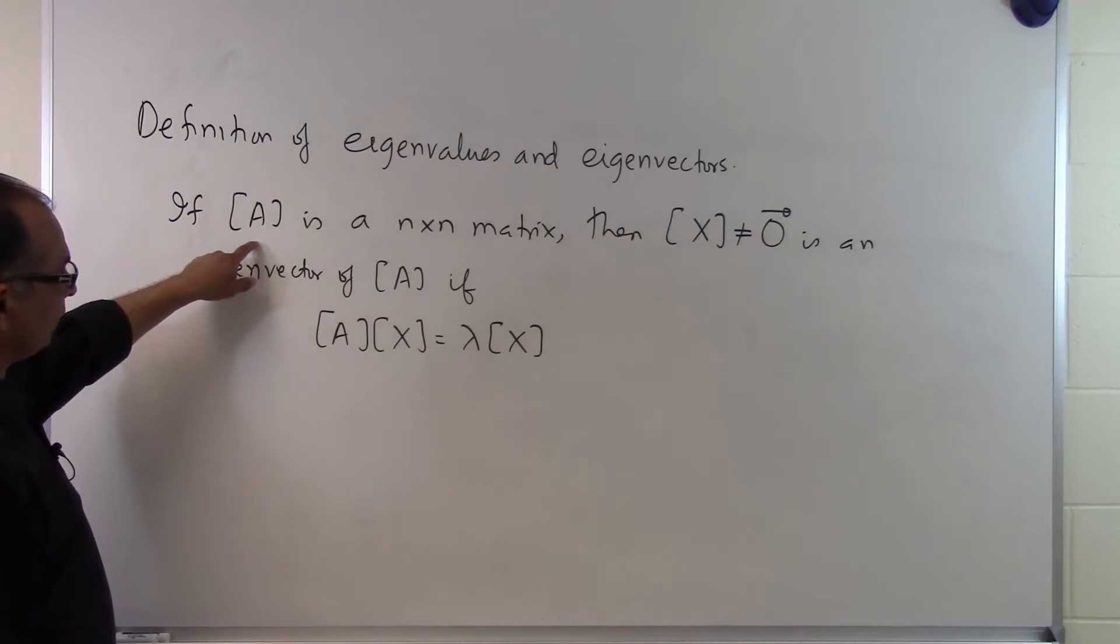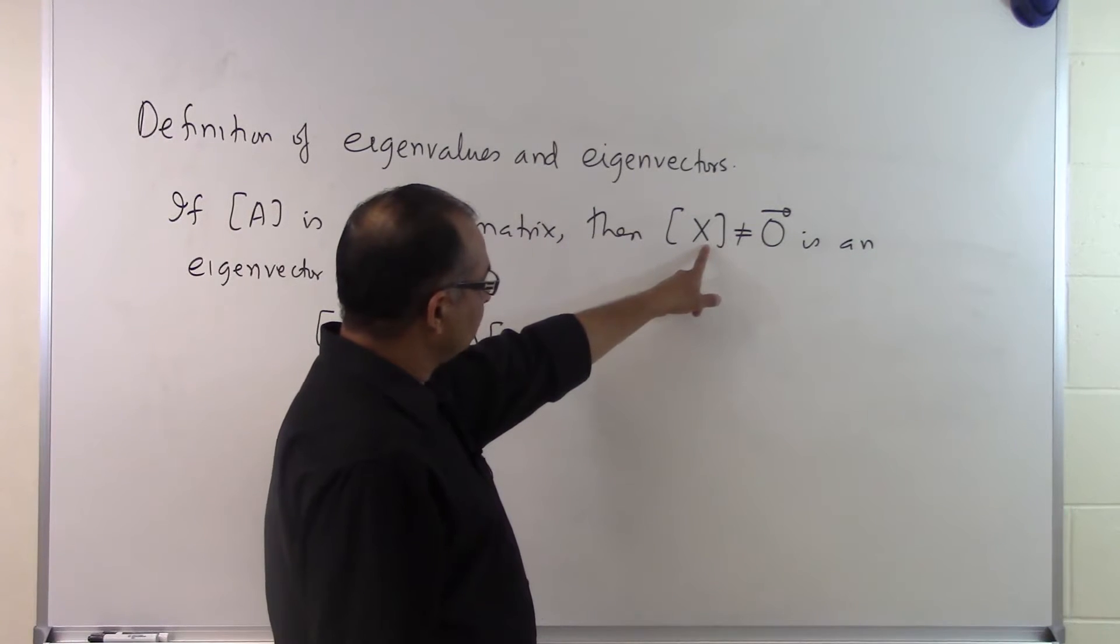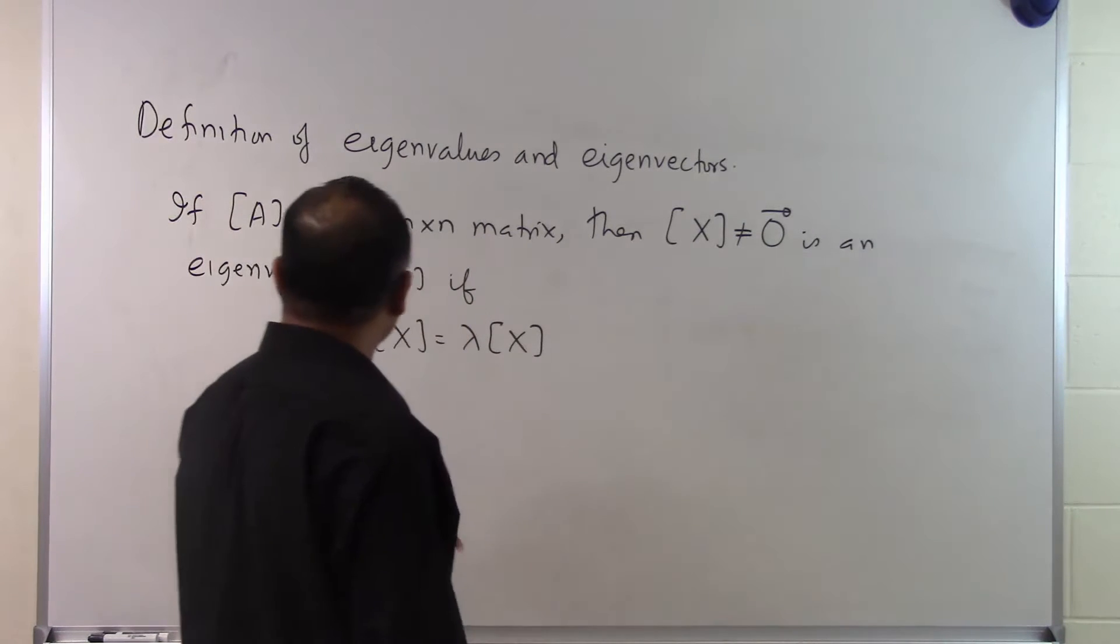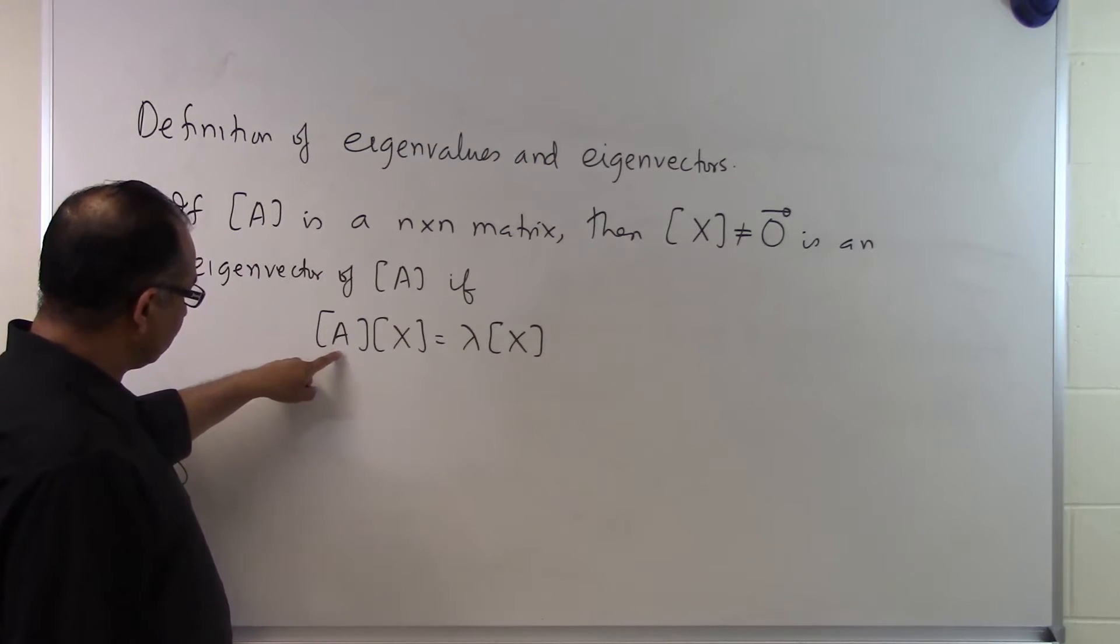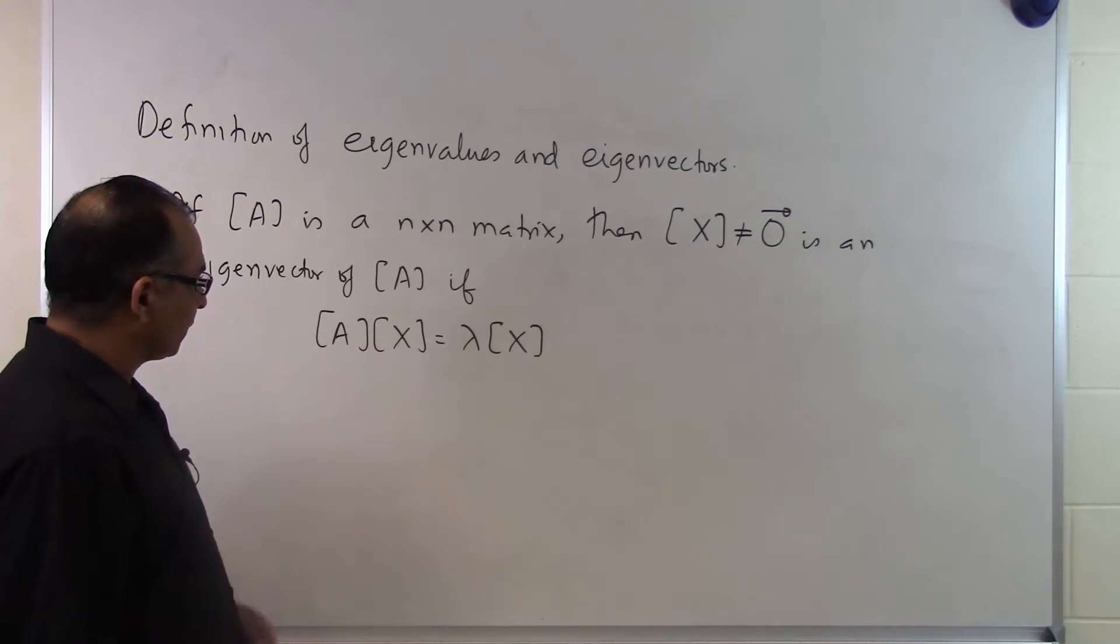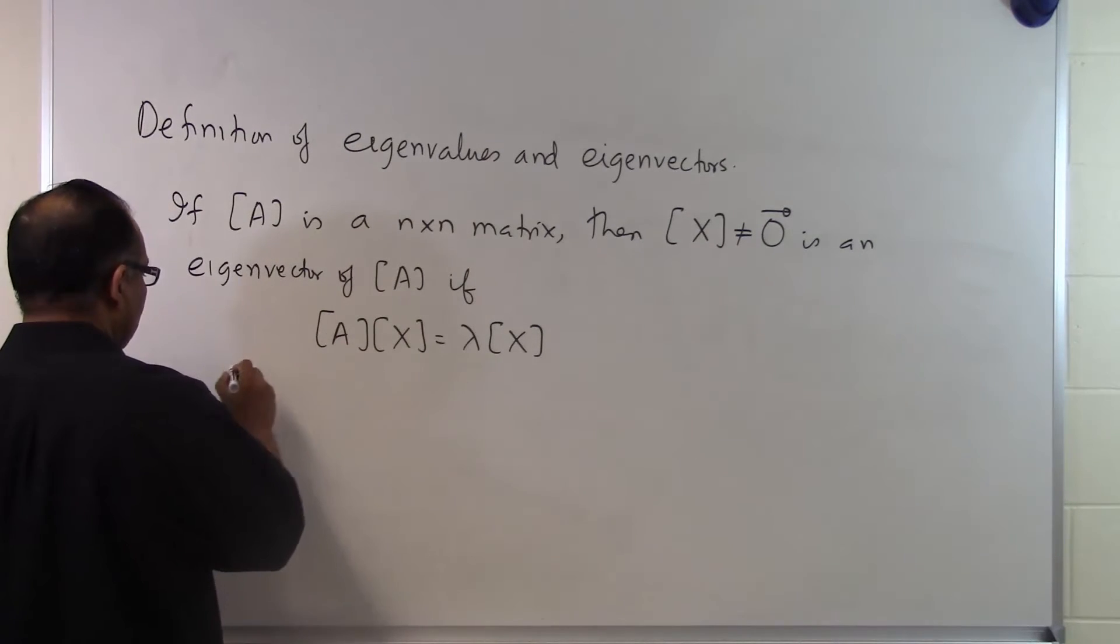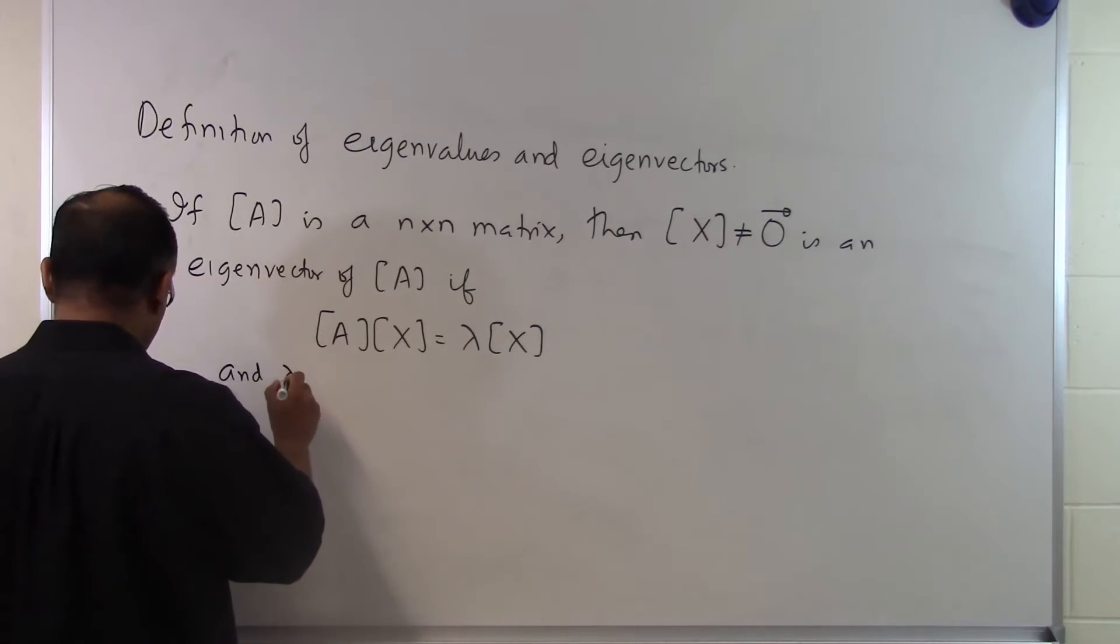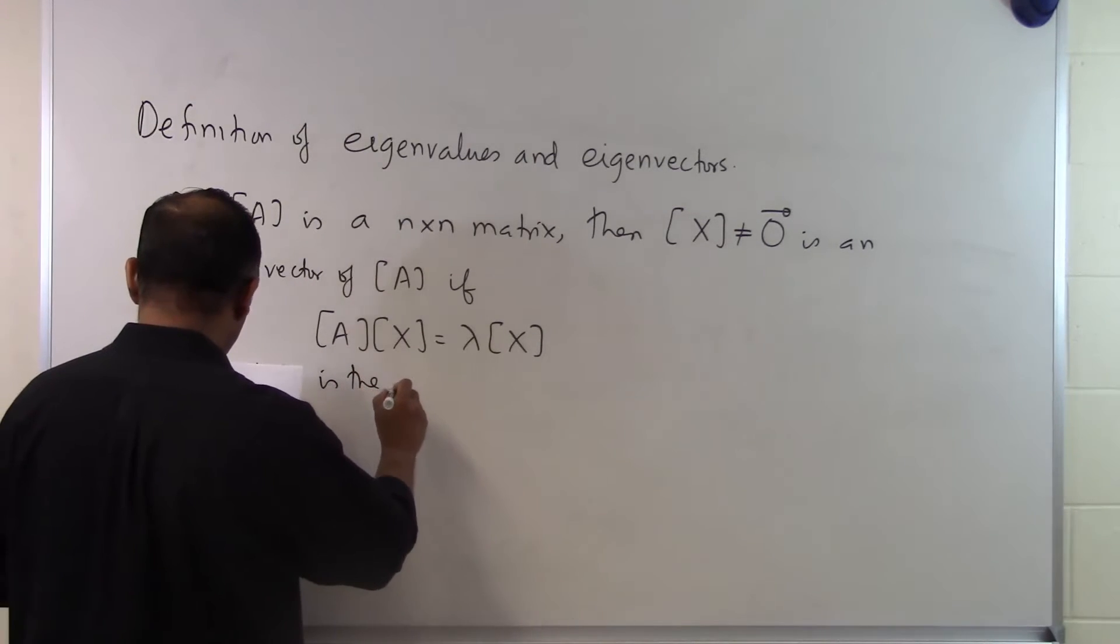So if you have a square matrix and you find out that there is a vector, a column vector which is not a zero vector and if that satisfies this particular condition here that A times x is equal to lambda times x, then x is called the eigenvector of A and lambda is the eigenvalue.